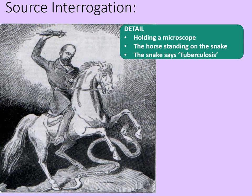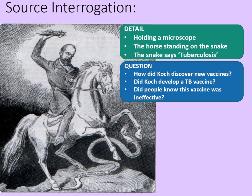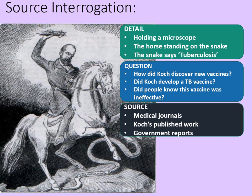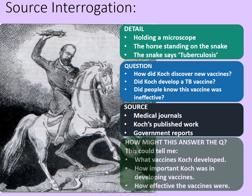On the snake it says 'tuberculosis bacillus' — that basically means the tuberculosis bacteria. Bacillus is probably used because it's a Latin term and it sounds a bit like 'basilisk', a monstrous snake from legend. What question might you ask? Well: 'How did Koch discover new vaccines?', 'Did Koch develop a TB vaccine?', or 'Did people know that this vaccine was ineffective?' For sources, you're usually better off using a contemporary source from the time — medical journals would fit that nicely. You could also look at Koch's published work and his own notes, or government reports.